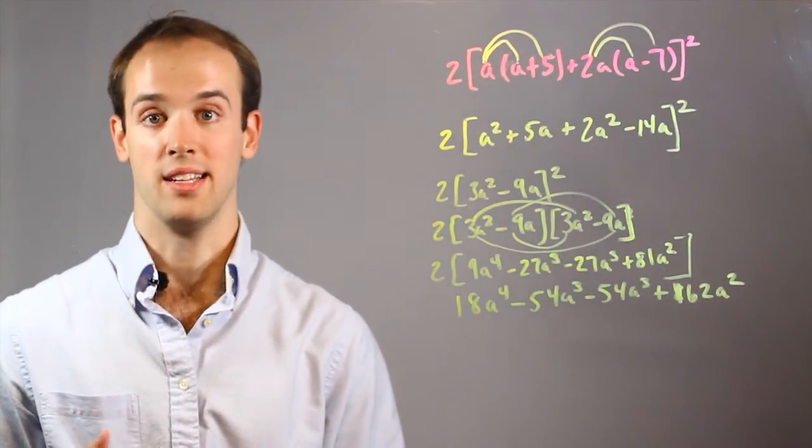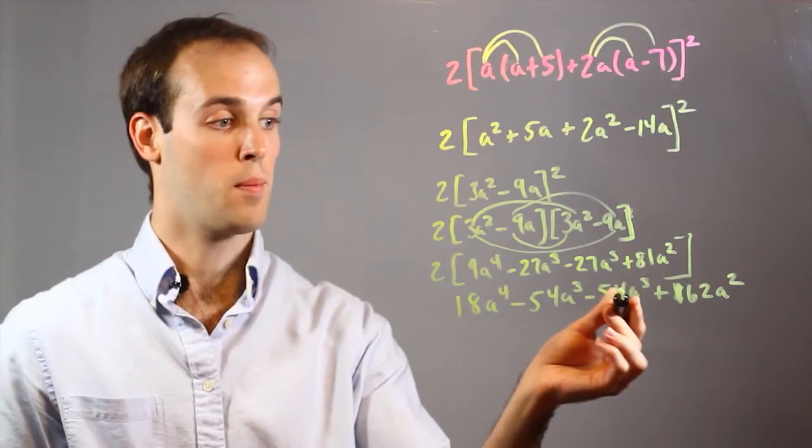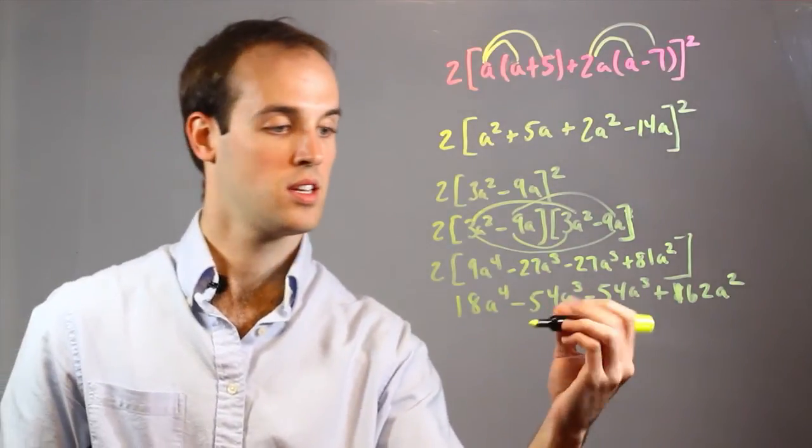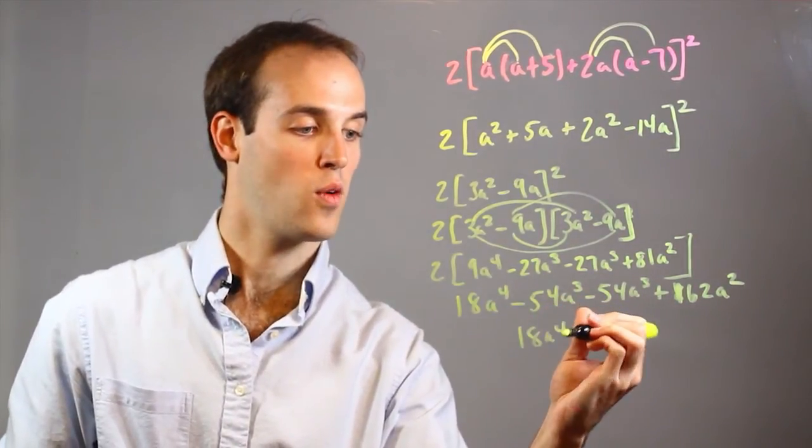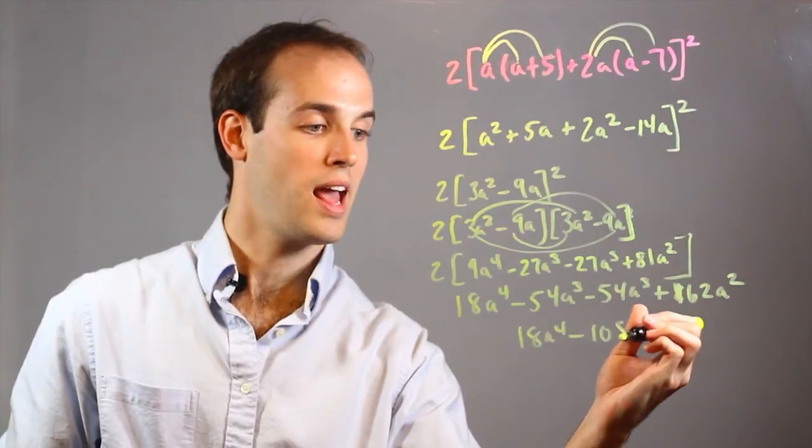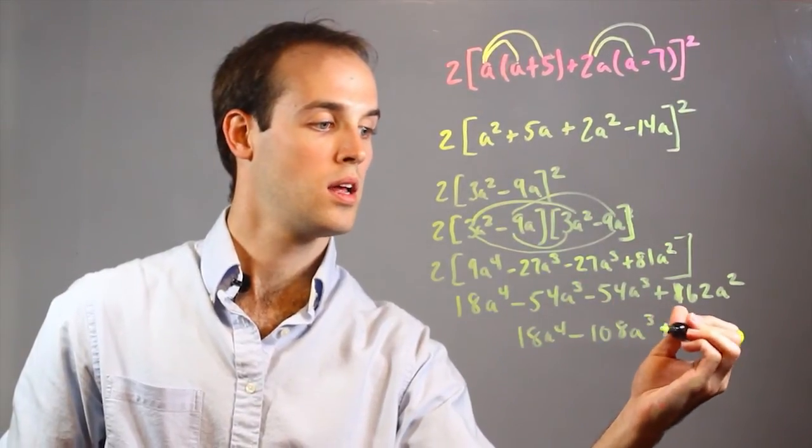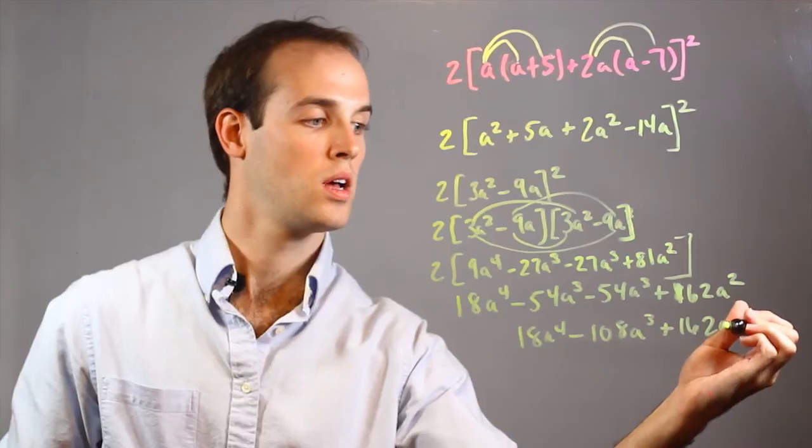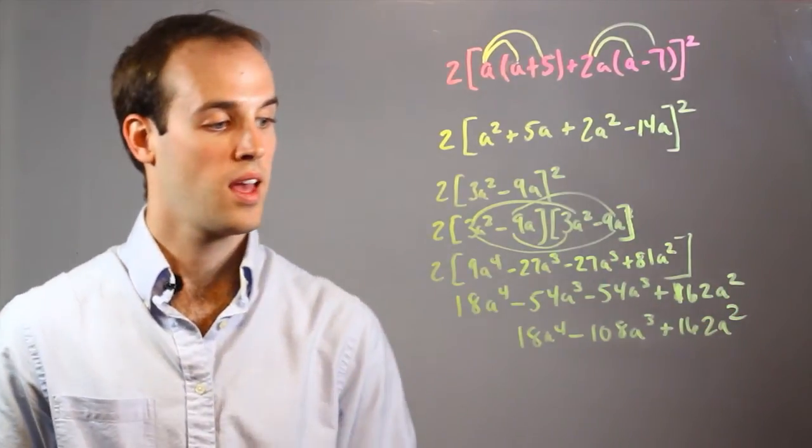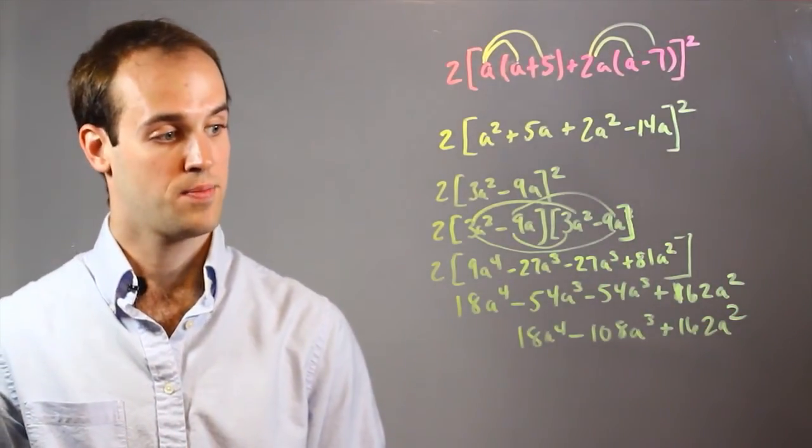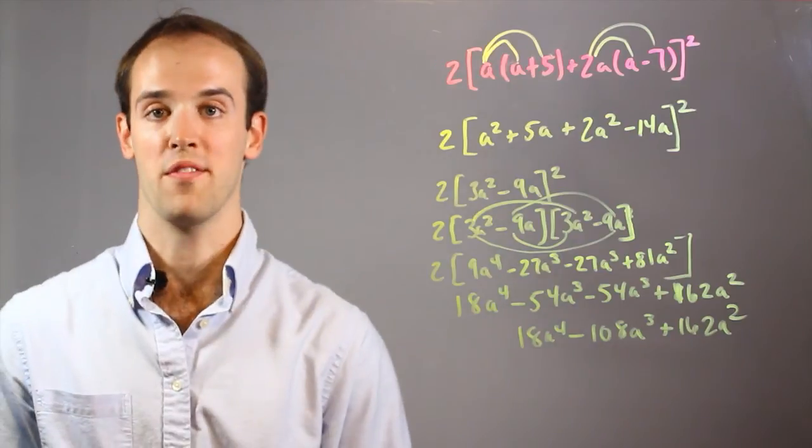And my last step would be to do any addition or subtraction. And I can combine these two like terms. So I have 18A⁴ - 108A³ + 162A². And that is as simple as I can get it without knowing what my value for A is.